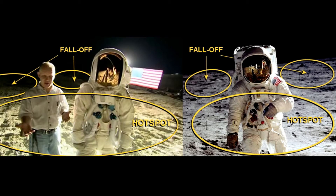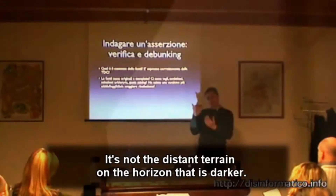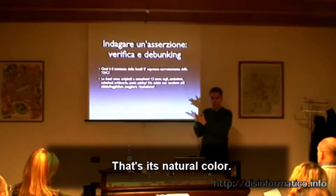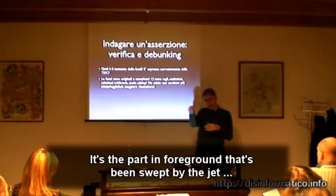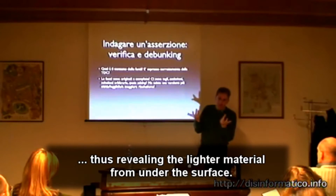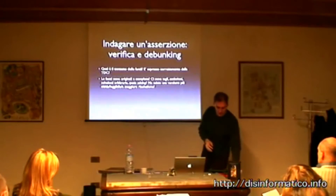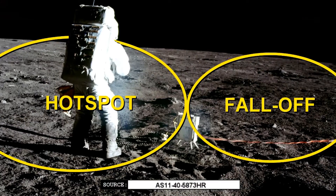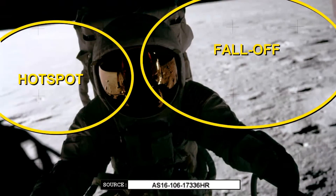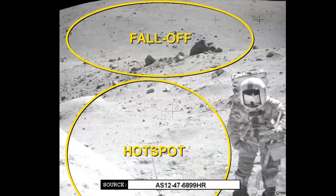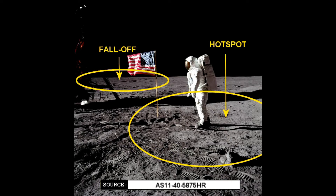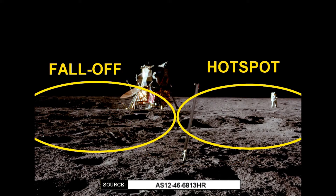According to Paolo Activismo, however, there is a different explanation for the fall-off of light in the distance. It would have been the engine of the LEM, he claims, to blow the dust away during the landing, thus revealing the lighter sand underneath. But this hypothesis doesn't hold water for at least two reasons. The first is that the hotspot phenomenon takes place in different missions and in different situations, some of which are definitely far away from the landing area of the LEM. It is ludicrous to think that the lunar module would have gone around to neatly blow the dust off all these areas before it landed.